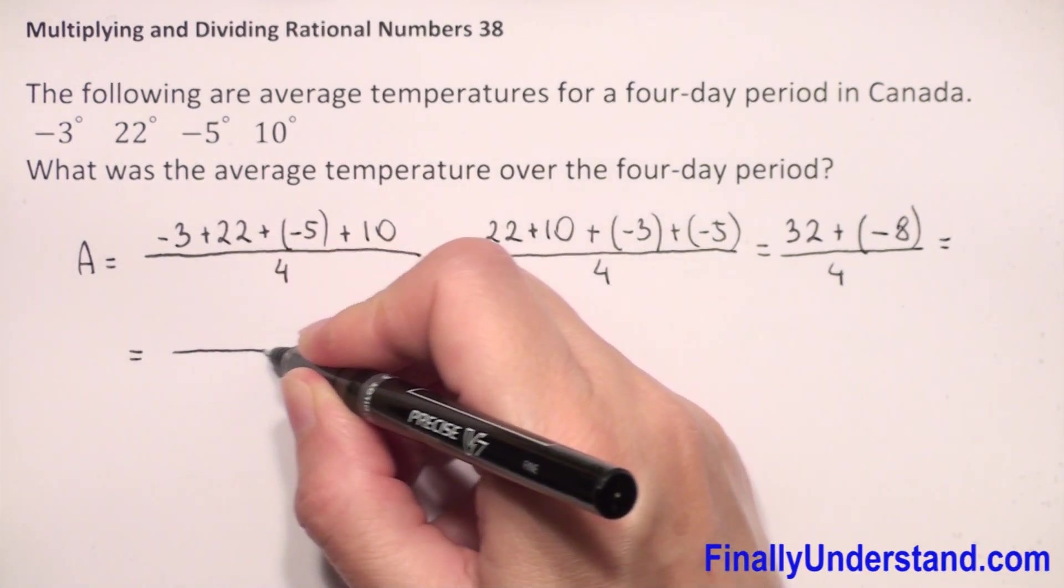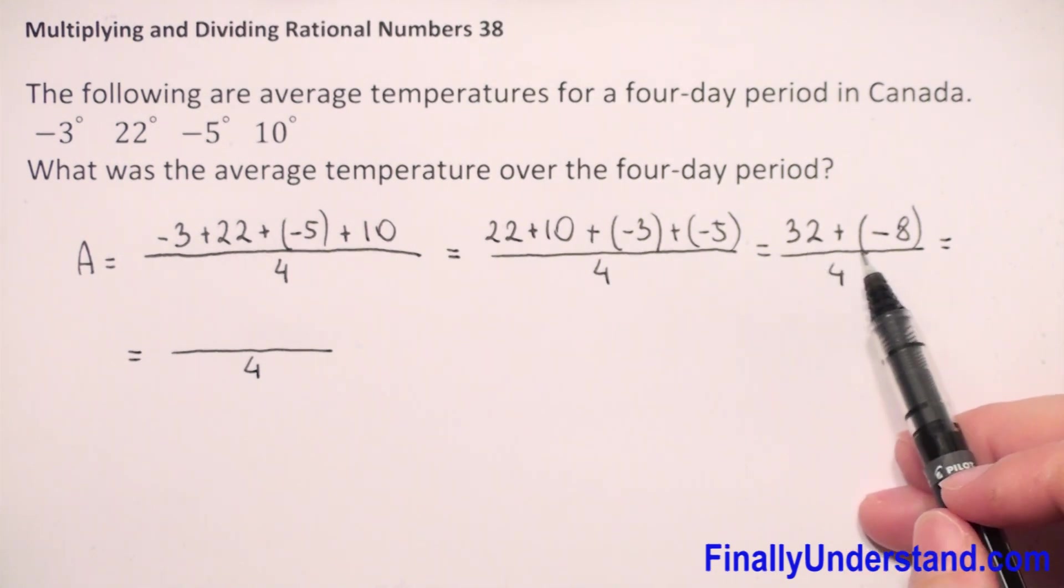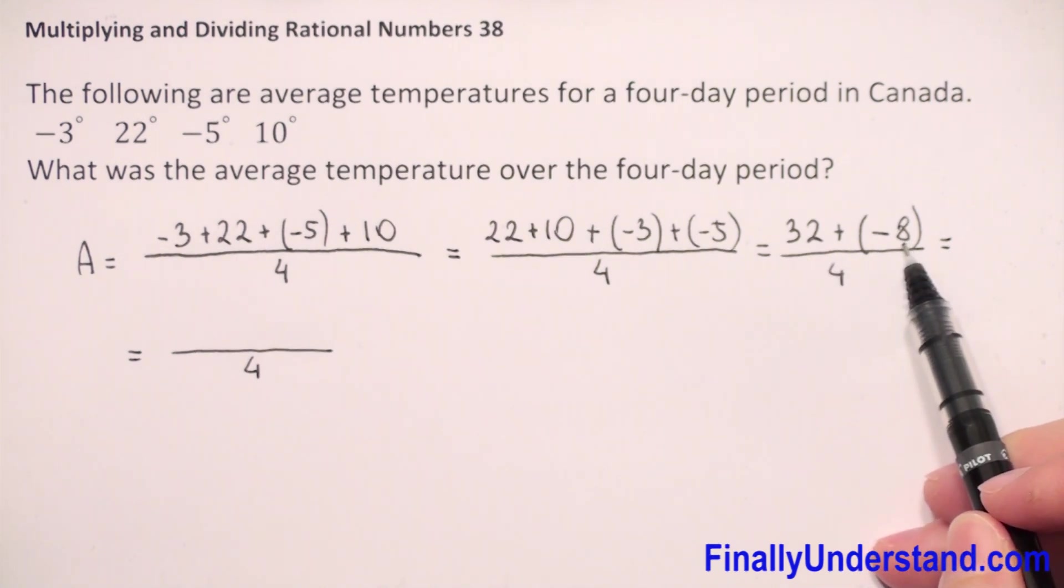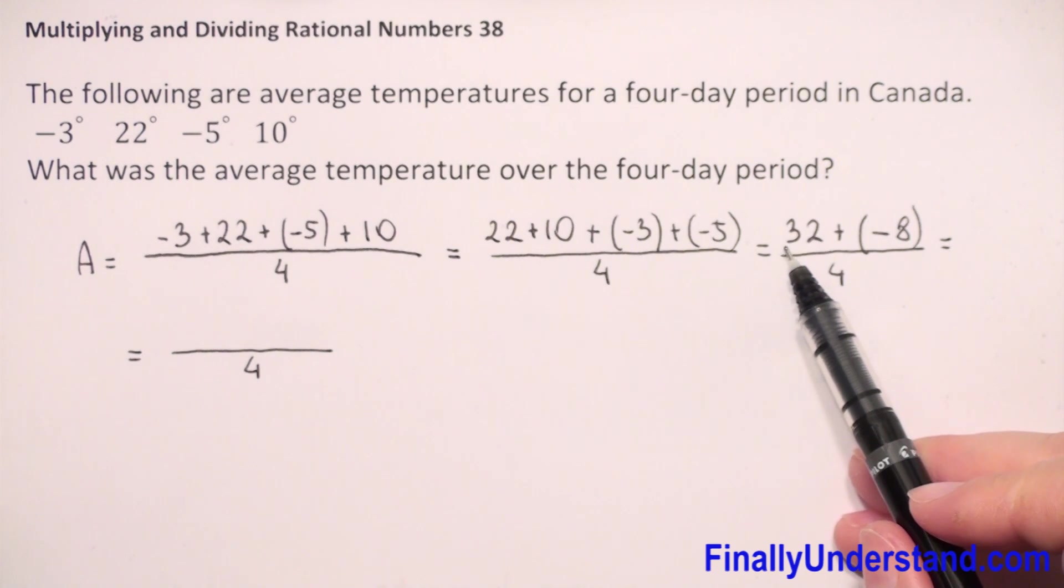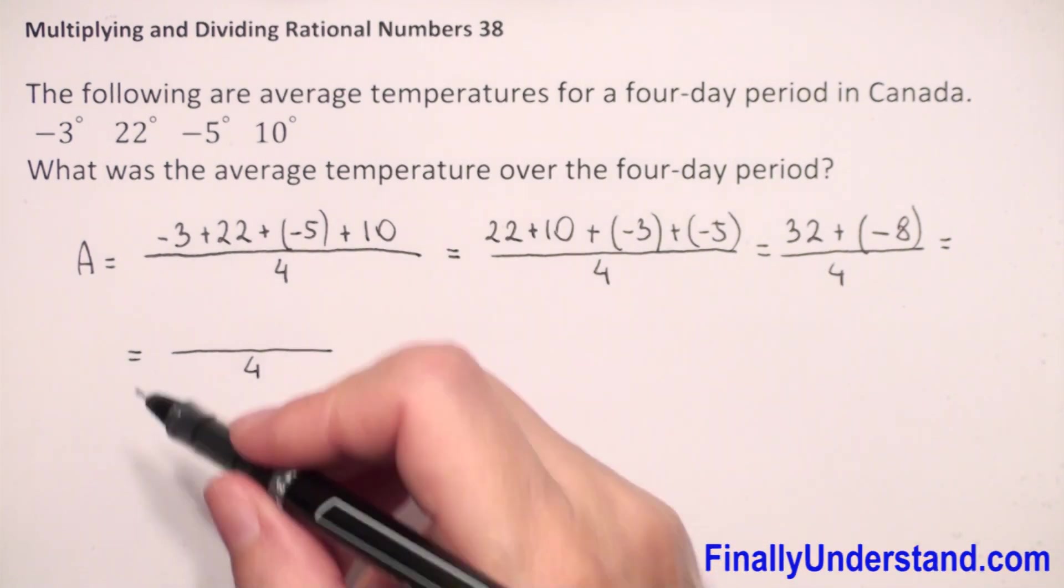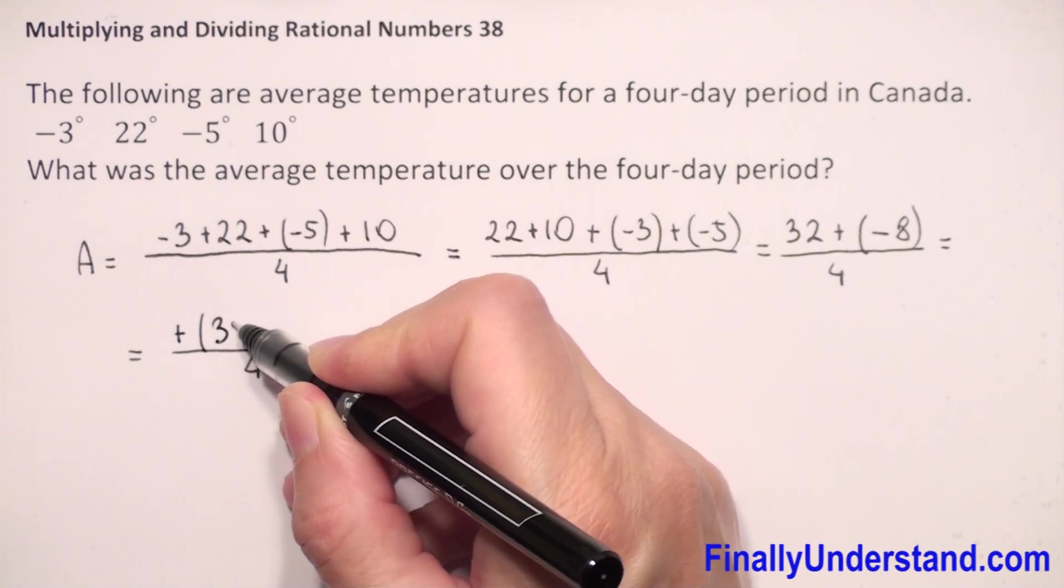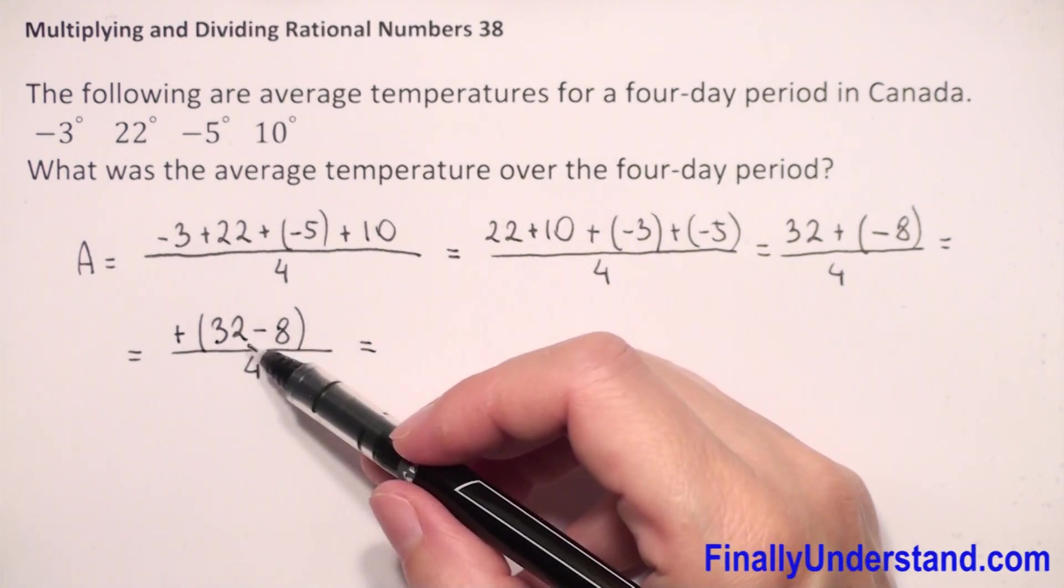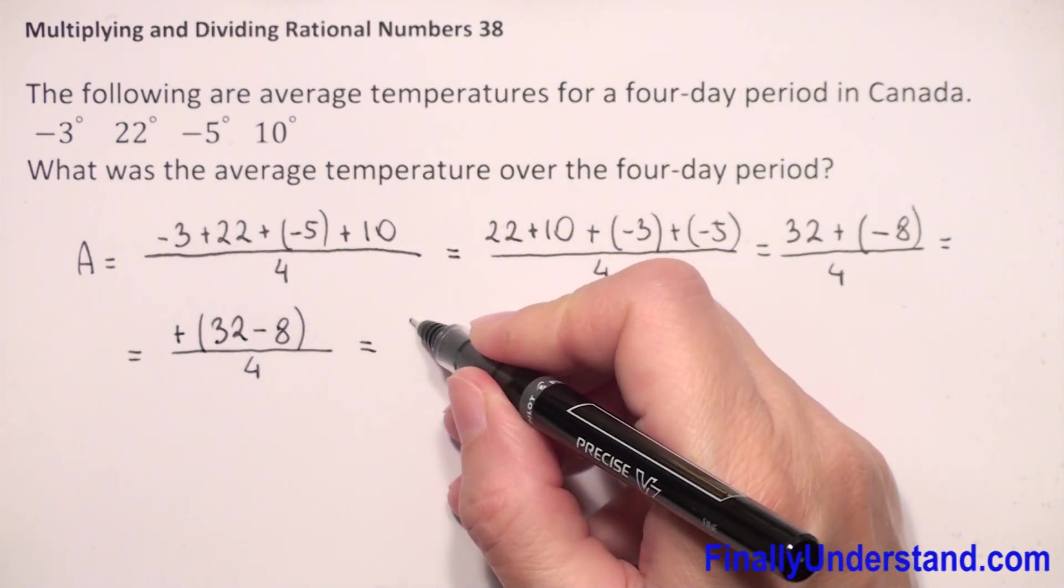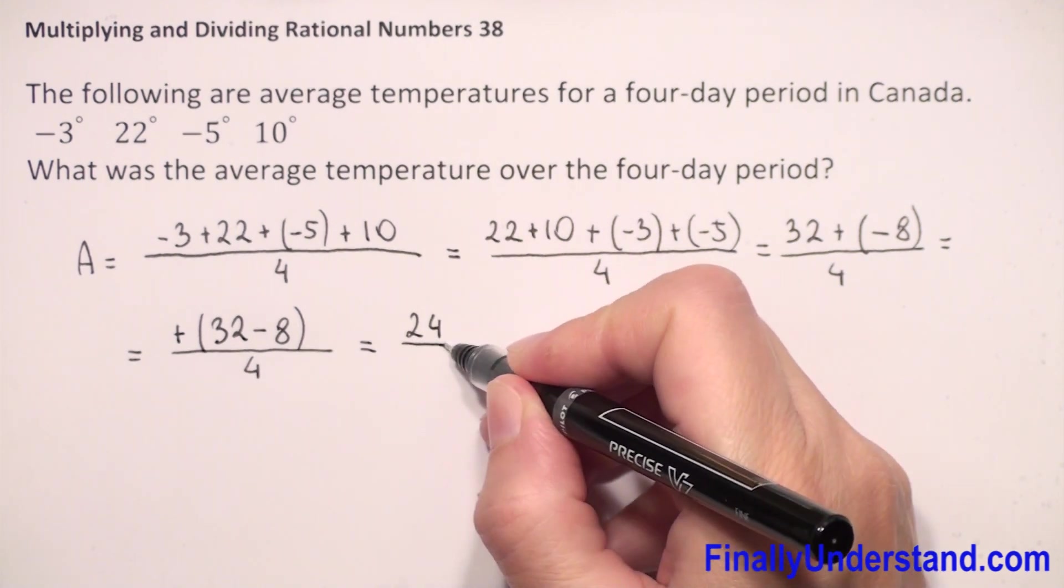This is equal to... the numerator we will rewrite as 32 plus negative 8. When we have positive number and negative, first you check which of these two numbers is greater. We forget about the negative sign. So we have 8 and 32. 32 is greater than 8, so we check the sign of the greater number. Before 32 we don't have any sign, it means this number is positive. So we copy the positive sign and we just subtract from 32, 8. So this is equal to 32 minus 8, which is 24 over 4.